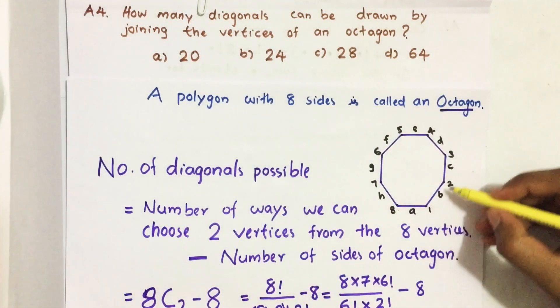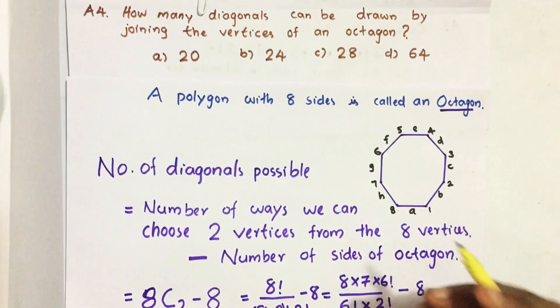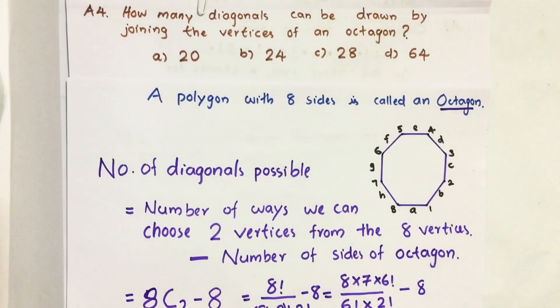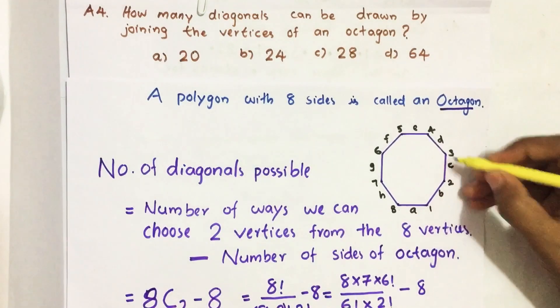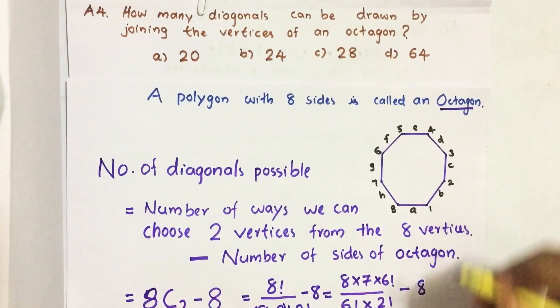By joining any two vertices other than adjacent vertices we get a diagonal. For example, joining 1 and 3 we get a diagonal; by joining 1 and 2 we get a side.